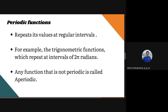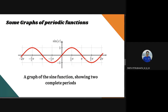Now let us understand what periodic functions are. Periodic means repeating or occurring at intervals, and a function is a relation involving one or more variables. Therefore, a periodic function is a function that repeats its values at regular intervals. For example, trigonometric functions repeat at intervals of 2π radians. Functions that are not periodic are known as aperiodic. To understand more clearly, we have a graph of the sine function showing two complete cycles: the first from minus 2π to 0, and the second from 0 to 2π.